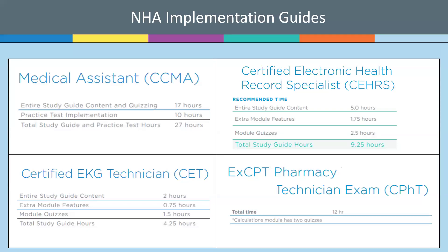Another resource you can obtain from your NHA representative are NHA's implementation guides. These guides outline the content, implementation suggestions, and even the average time it should take for a candidate to navigate through any of the NHA study materials. You can see here a snapshot across just four of our eight certification prep packages and the time it can take an average candidate to work through just the study tutorial portion, which can range widely. These guides are available for all of NHA's learning resources.